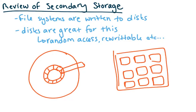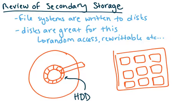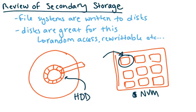A quick review of secondary storage: file systems are written to disks, and disks are great for this because they have random access and are rewritable. HDDs are partitioned into sectors, and each sector is considered a block — that's the unit of data transfer. NVMs also use blocks, so we need to figure out how our file systems and files can be stored to fit into these block structures on each secondary storage device.